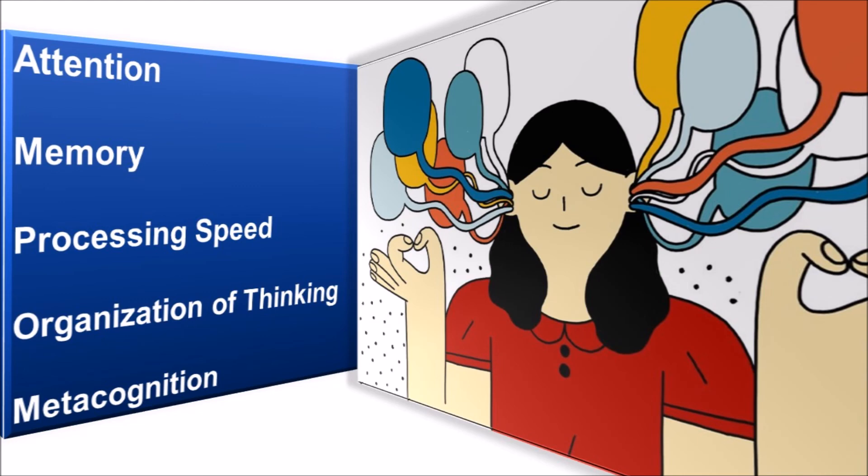Organization of thinking. As children mature, they are more planful, they approach problems with strategy, and are flexible in using different strategies in different situations.